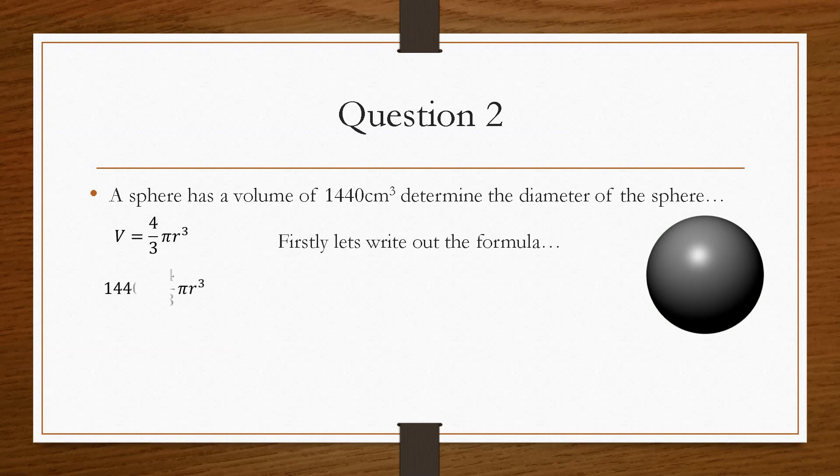Now, we will substitute in the information that it has gave us. So we'll substitute in the 1,440 and we can see here that the only unknown is r³. So what we can do is rearrange for r. So we change the subject of the formula. Now, I'll put a link in the description on our video to change the subject of the formula that you can have a look just in case this is a bit challenging for you.